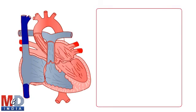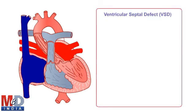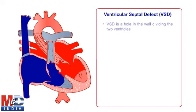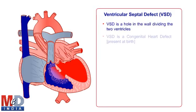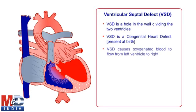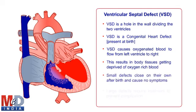This illustration shows us the hole present in the ventricular septum. Since the pressure in the left ventricle is greater than the pressure in the right ventricle, oxygen-enriched blood flows from left to the right side. The mixing of oxygen-enriched blood with oxygen-depleted blood is shown in purple color.